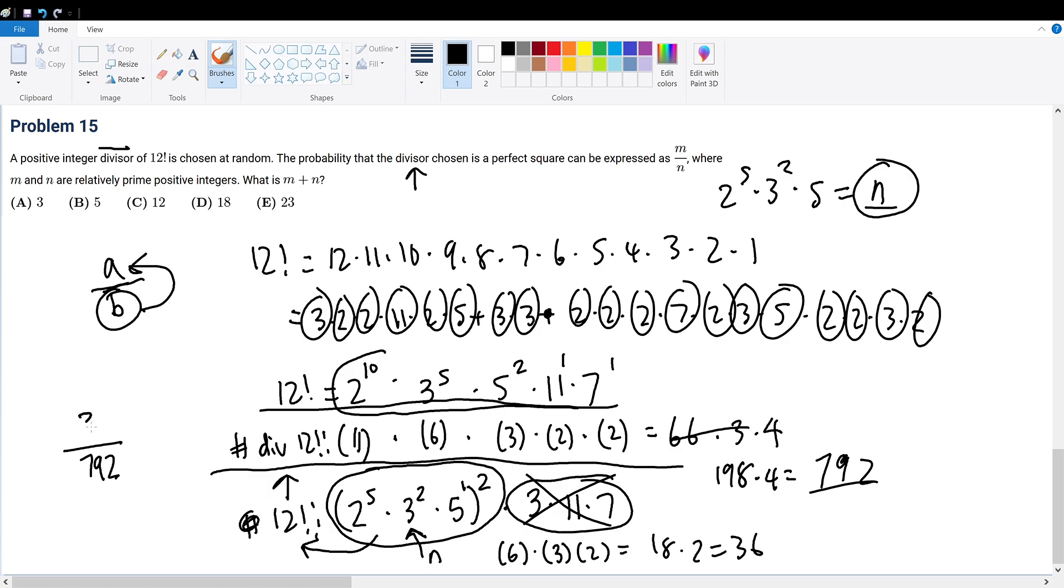So we have 36 over 792. Now see if we can simplify this. We can try out 792 with 36. We can put 2 here and we'll get 72. We put another 2 here, meaning that 36 is a factor of 792. So this will give a remainder of 0. But this can be factored into 1 over 22.